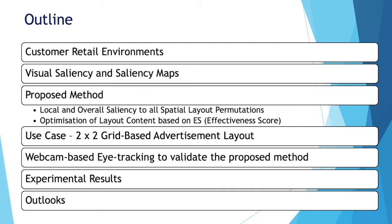Let's move on to the outline of the presentation. We will talk about customer retail environments and the role played by visual attention processes, and more particularly visual saliency and saliency maps. Our proposed method is about optimization of layered content based on a new effectiveness score, which is based on local and overall saliency applied to all spatial layout permutations. I will describe a use case based on a 2x2 grid-based advertisement layout, show how we validated our method using a webcam-based eye tracking tool, and then describe our experimental results.